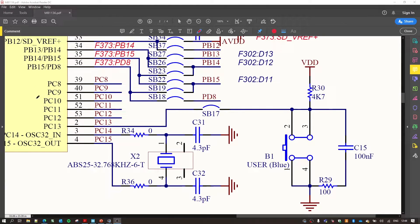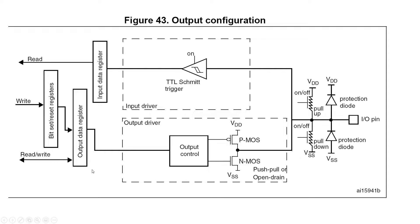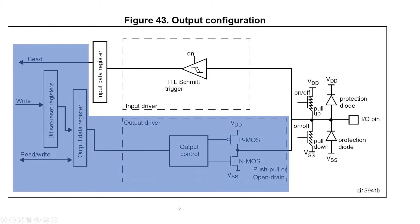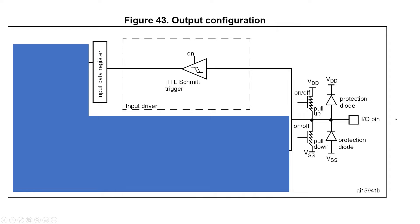Now let's check what's happening inside a GPIO pin of the microcontroller. In the previous video we saw the output configuration — push-pull or open-drain — but that part is not important for this video. Starting from the right, the goal is to reach a particular voltage level at a point so that the input data register sets a bit to zero or one. Since the IO pin is already pulled up externally, we don't need the internal pull-up or pull-down, so those switches will be turned off by our software configuration.